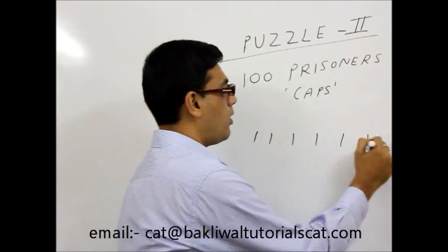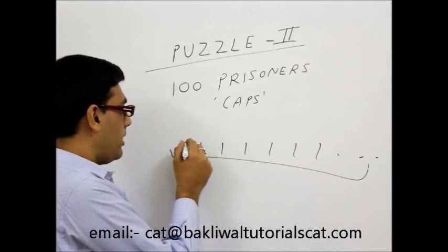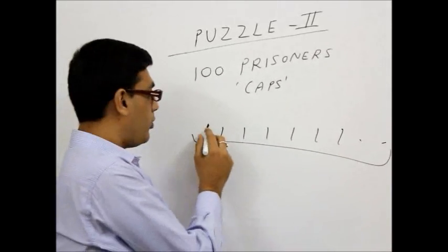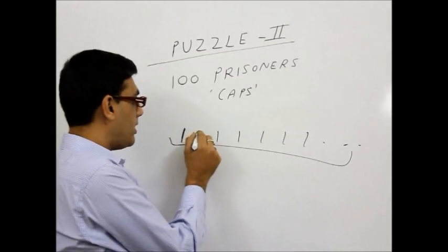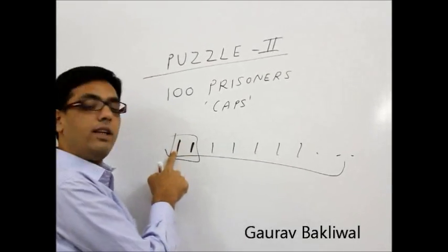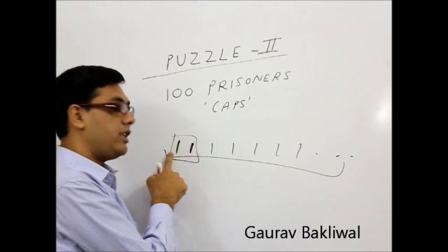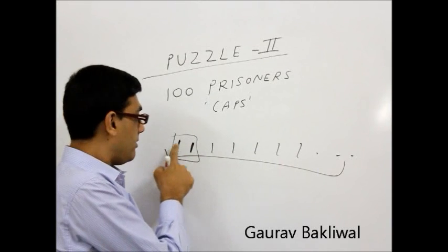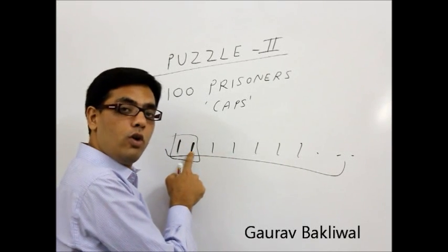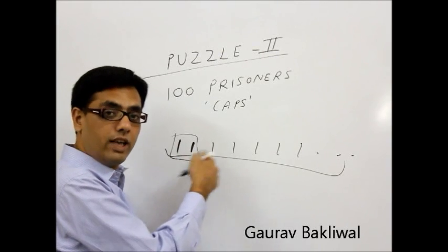We will shortly see how. But let us first understand the logic of 50. If there are 100 people who are standing in line like this, this person will speak the color of this person, the next person. These two form a group. So this person is dead, let's say, because he doesn't know his color. But if he shouts white, the second person will know that the color on his head is white. That's what the strategy is.